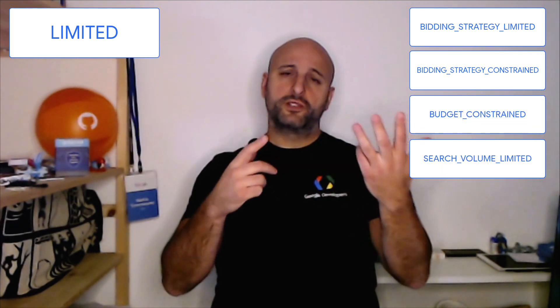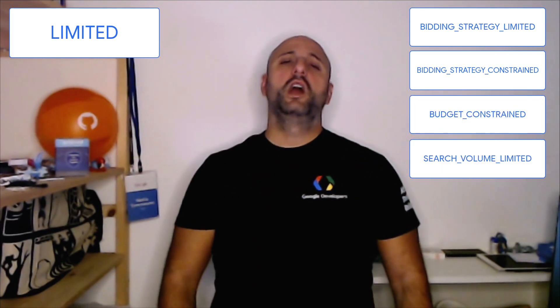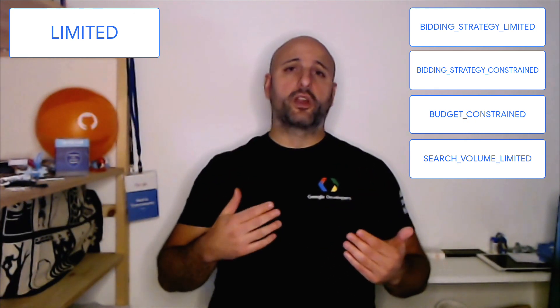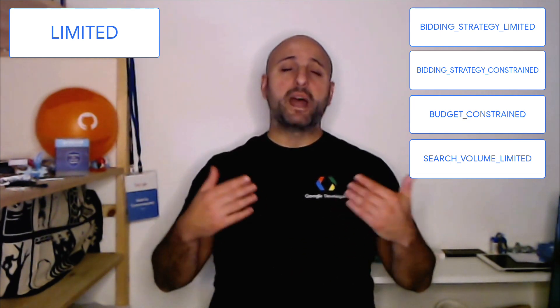Similarly, you may not see that your campaign is not serving up to its full potential due to limitations in its budget, in its bidding strategy, or in its targeting. All these possibilities are covered by the primary status limited, which can be caused by one of: bidding_strategy_limited, bidding_strategy_constrained, budget_constrained, or search_volume_limited. By showing the reason or reasons why a campaign has primary status limited, you will help your users understand exactly where they need to intervene to optimize the serving of their campaign, or maybe even be able to perform these optimizations automatically in your application.